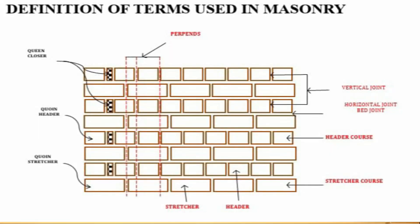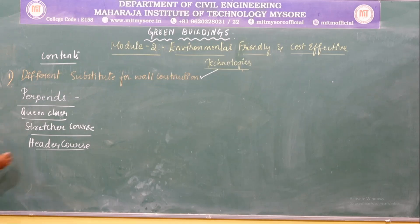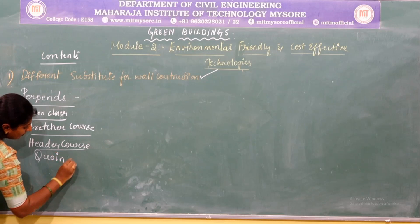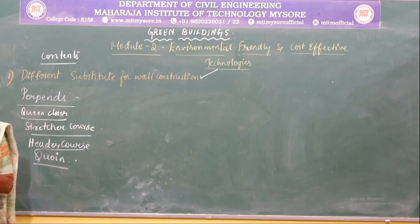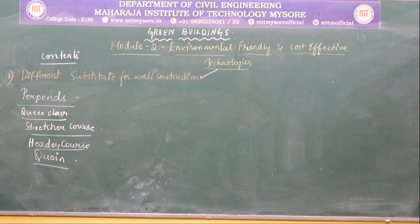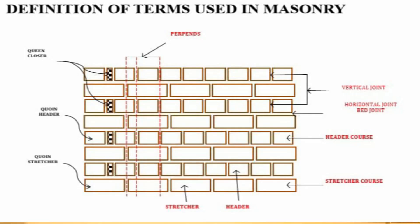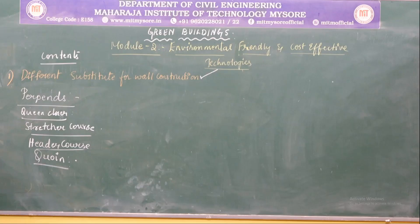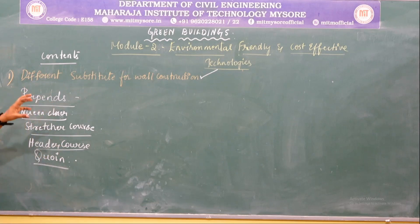The next term in the figure is kyon. A kyon is a brick that is cut lengthwise into two halves and is especially used at the corners in brick walls. If these are laid in the header course, we call it a queen header. If a kyon is placed in the stretcher course, we call it a kyon stretcher.